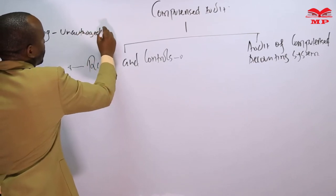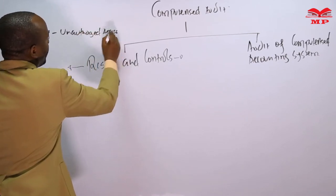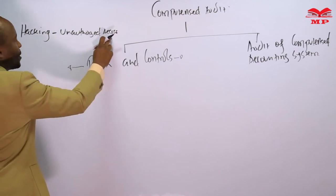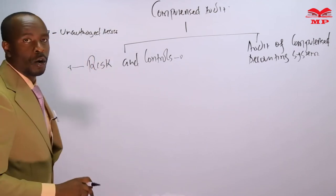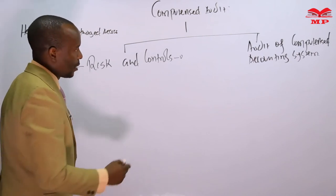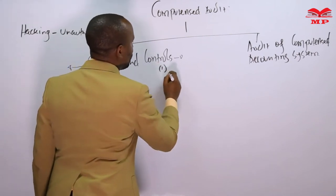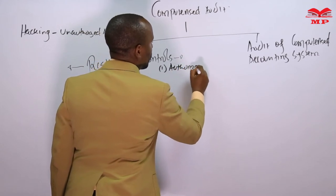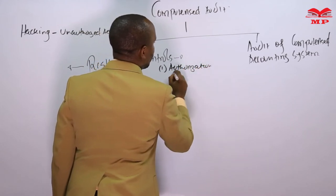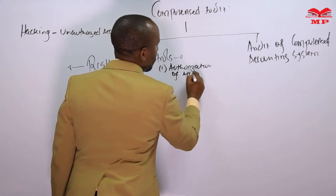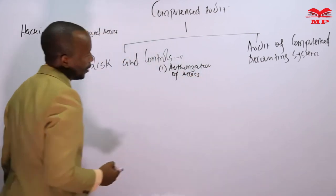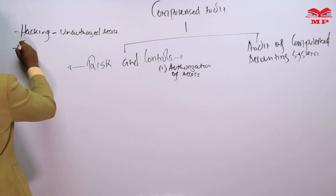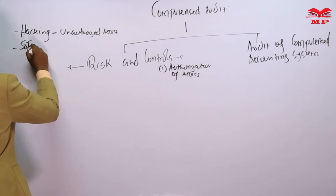Unauthorized access means someone accesses your system without proper authority. So control number one is authorization of access — that becomes a control. There may also be what we call software piracy.